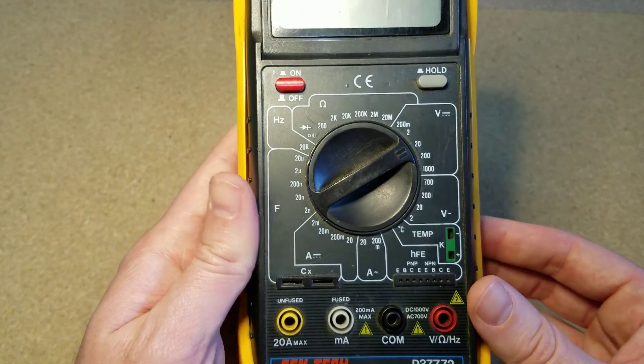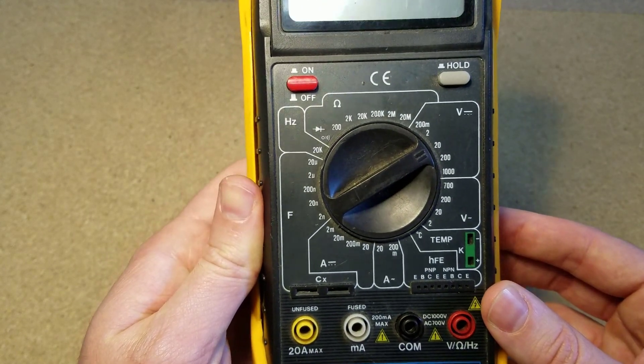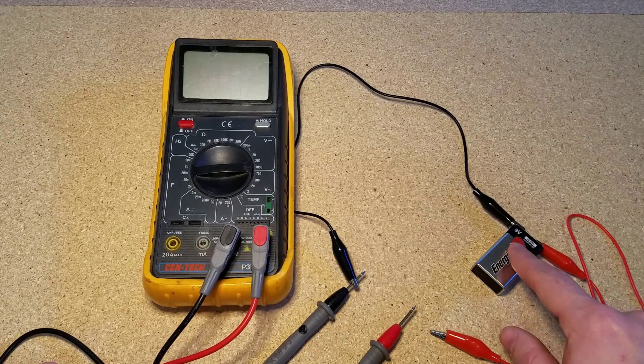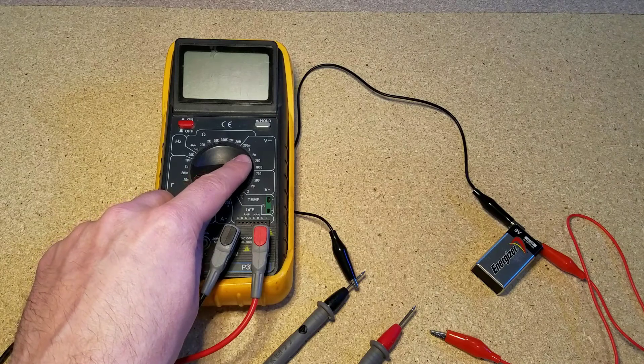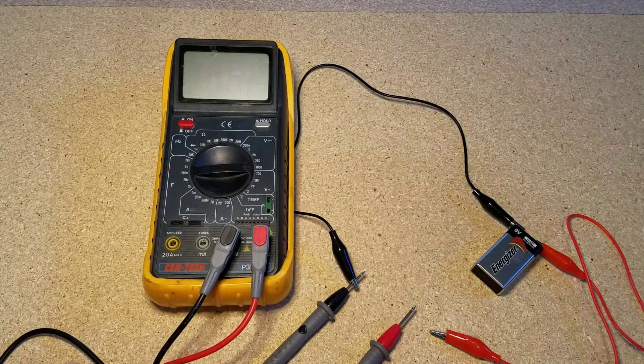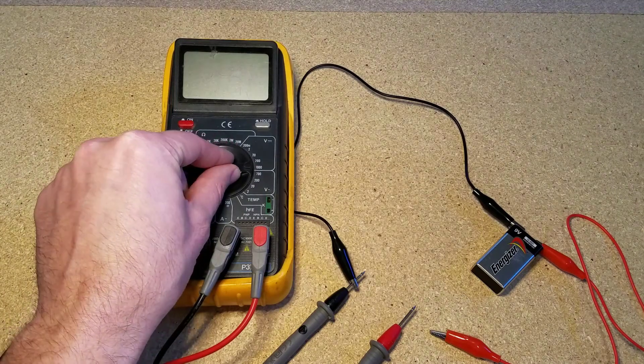Let's hook this up to the 9 volt battery and I'll show you what I mean. All right, so we've got the battery set up again and since we know it's a 9 volt battery we could just set our meter to the 20 volt range. But let's pretend that we don't know what the voltage is so that I can show you what it looks like when you step the range down on the meter.